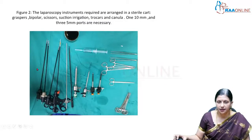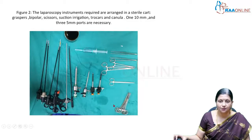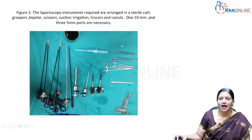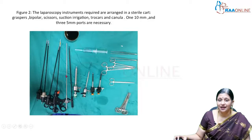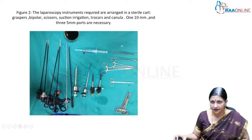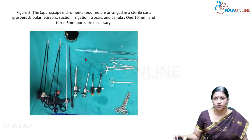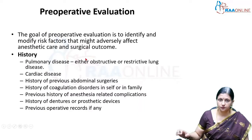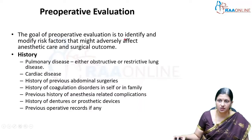Regarding the instrument tray and trolley, we should keep it minimal and simple with no crowding of instruments, arranged on a sterile card. We have laparoscopic graspers, bipolar scissors, a suction-irrigation cannula, trocars — one 10 mm and three 5 mm ports — instruments for port closure, and a syringe with 5 ml used for checking the position of the Veress needle.